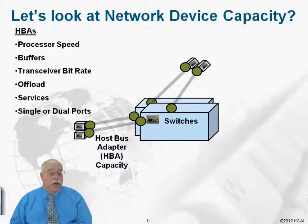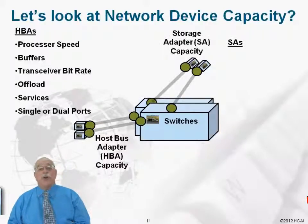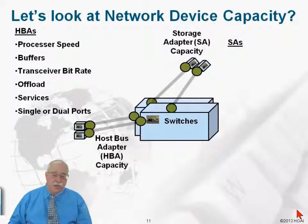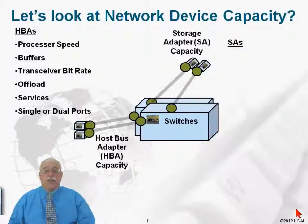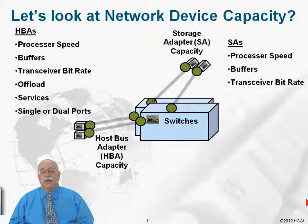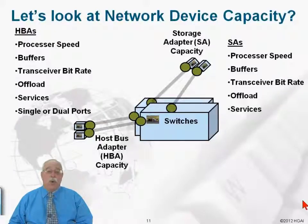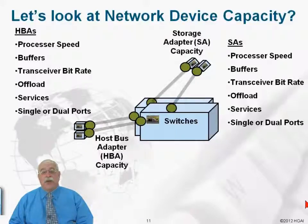Adapters can be single or dual ported. When building for a high availability environment, we want redundant or dual pathing — one adapter connected to one switch while another adapter port connects to another. On the storage side, we have the storage adapter — host is HBA, storage is SA. There are capacity issues relating to that adapter as well: processor speed, buffering, transceiver bit rate, and an opportunity to have firmware or hardware offload on the storage adapter side. Services are both requested and offered by those adapters on both the host side and the storage side.